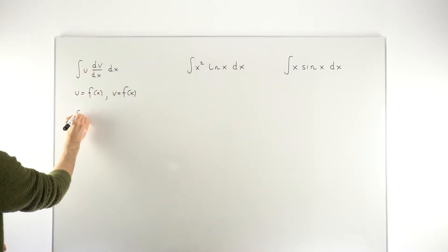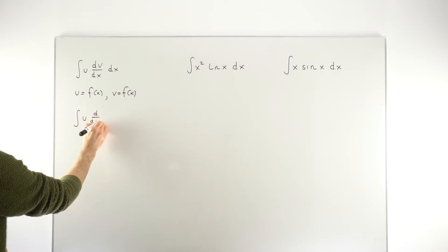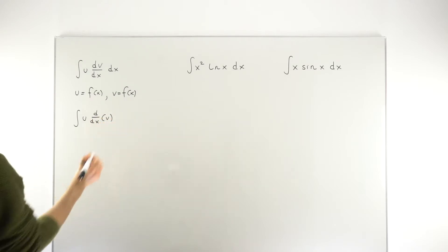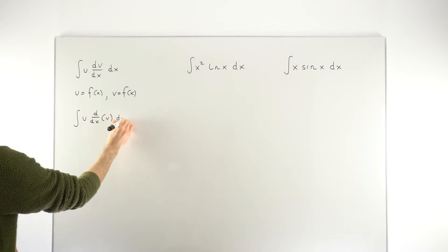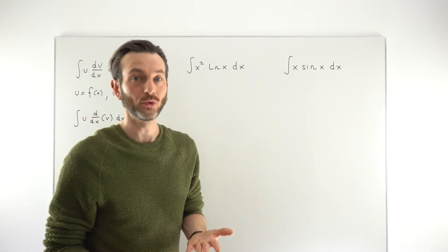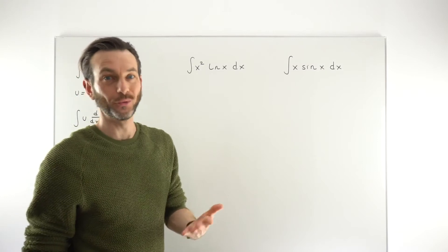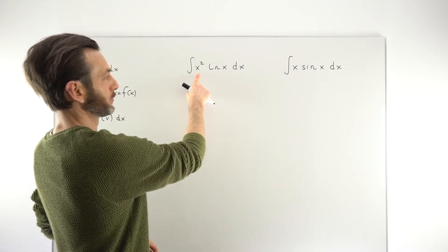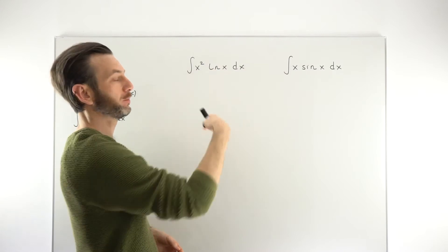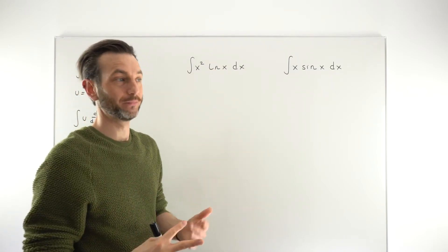So you could also think of the integration by parts as u times the derivative with respect to x of the function v, and then we're integrating that dx. So basically what that means is that when we come to use the result, you've got to nominate one of your functions as being u and one of your functions as not being the other function v, but the derivative of some function v.